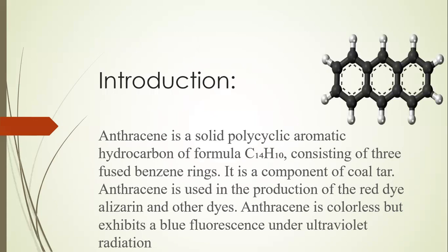Here is the introduction of Anthracene. Anthracene is basically three fused benzene rings. Benzene is an aromatic compound consisting of a ring with delocalized pi electrons. Anthracene is a solid, polycyclic aromatic hydrocarbon with the formula C14H10, consisting of three fused benzene rings. It is a component of coal tar, which is a black, thick liquid with an unpleasant smell, obtained by heating coal in the absence of air.